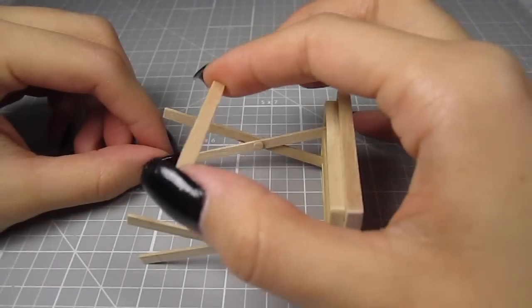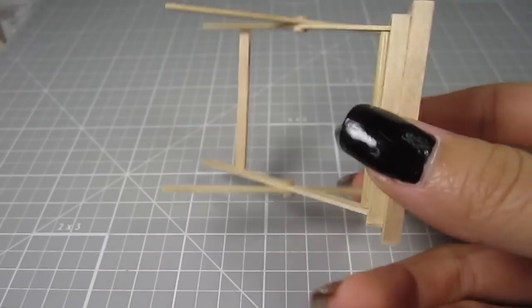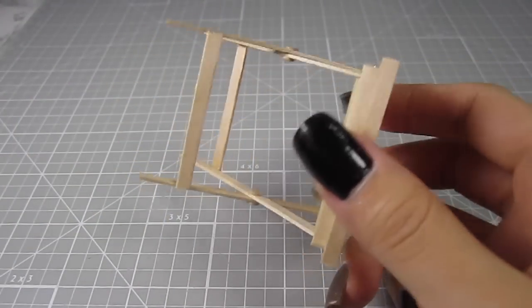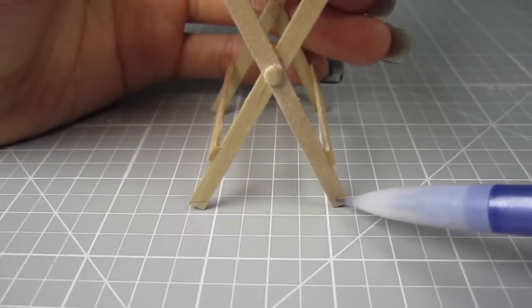For some stability on the legs, I cut out two 1.25 inch sections from yet another coffee stirrer and glue them to the legs. Now let's cut the bottom of the table legs at an angle so it's flush to the ground.